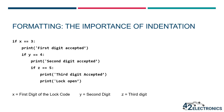The first line of code is an if condition. X equals 3 will be evaluated. If true, 'first digit accepted' will be printed to the shell and the next condition will be evaluated. If y equals 4 evaluates as true, then 'second digit accepted' will be printed to the shell and the third condition will be evaluated. If the third condition z equals 5 evaluates as true, then 'third digit accepted' and 'lock open' will both be printed to the shell. So the only way 'lock open' can ever be printed is if all three conditions preceding it evaluate as true. If any of the digits entered do not equal the expected digit, then the rest of the code will be skipped and the lock won't open.